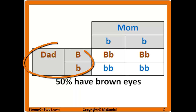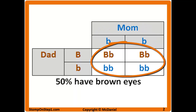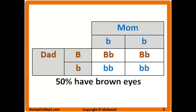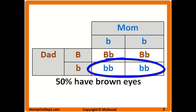On the left we have both alleles from the father and on the top we have both alleles from the mother. In the four white boxes you can see the four different possibilities by recombining the different alleles from the parents. Each of these four possibilities is equally likely to occur. Any combination highlighted in brown text is going to end up with brown eyes, and any highlighted in blue text will have blue eyes. You can see that 50% of the children on average are going to have brown eyes and be heterozygous, and 50% are going to have blue eyes with two recessive alleles.